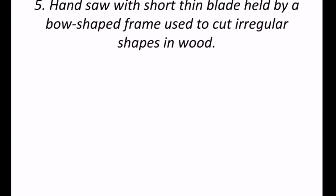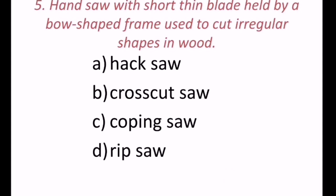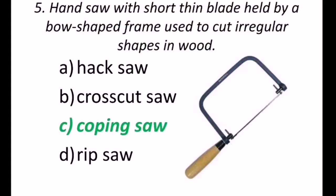5th question reads, Hand saw with short thin blade held by a bow shaped frame, used to cut irregular shapes in wood. So that may be hacksaw, or cross cut saw, coping saw, or rip saw. Here coping saw is used with bow shaped frame, to cut irregular shapes in wood.